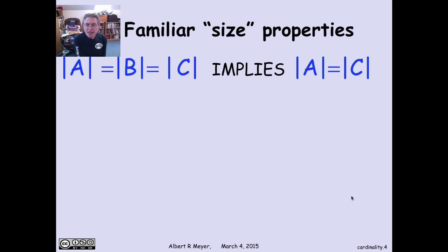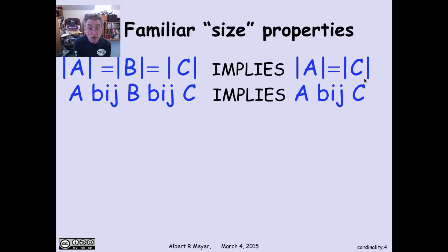So now let's examine the standard size properties that you'd expect if these relationships of Surge and Byge behaved like relationships between sizes. So one basic property that finite sizes have is that if A is equal to B and B is equal to C in size, then the size of A and the size of C are the same. That's certainly true for finite sets. Does it hold for infinite sets where now equality is going to be replaced by Byge? Well, we have to check it. Is it true that if A Byge B and B Byge C implies A Byge C? Well, how do you prove that? Well, it's true, and here's how.